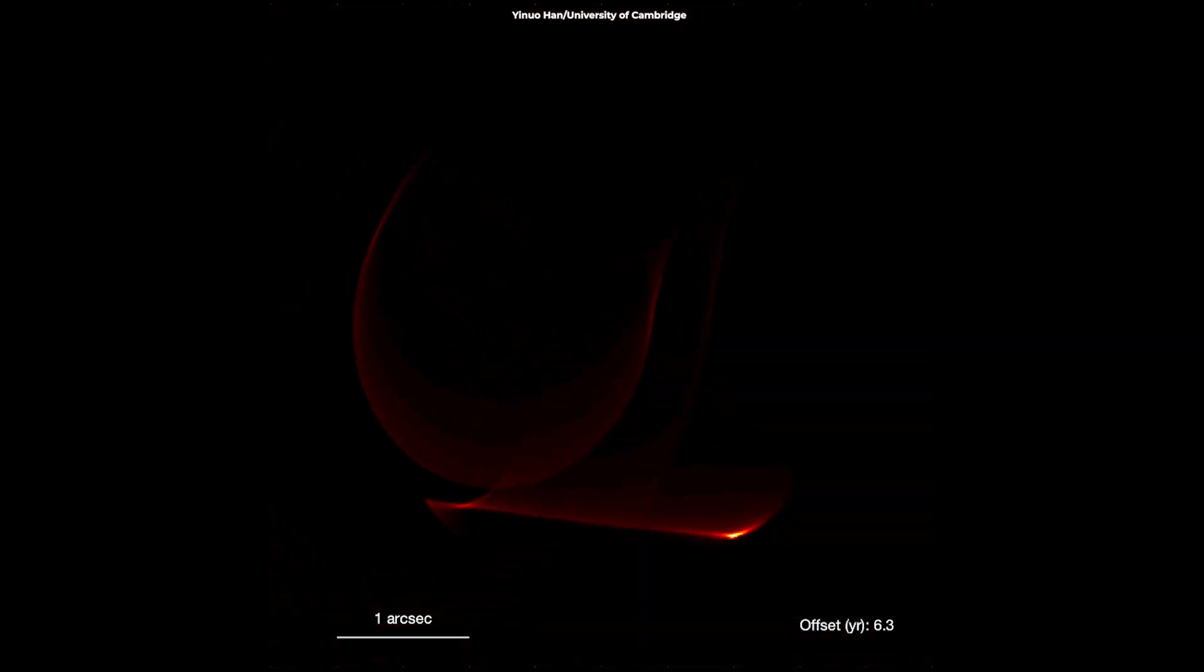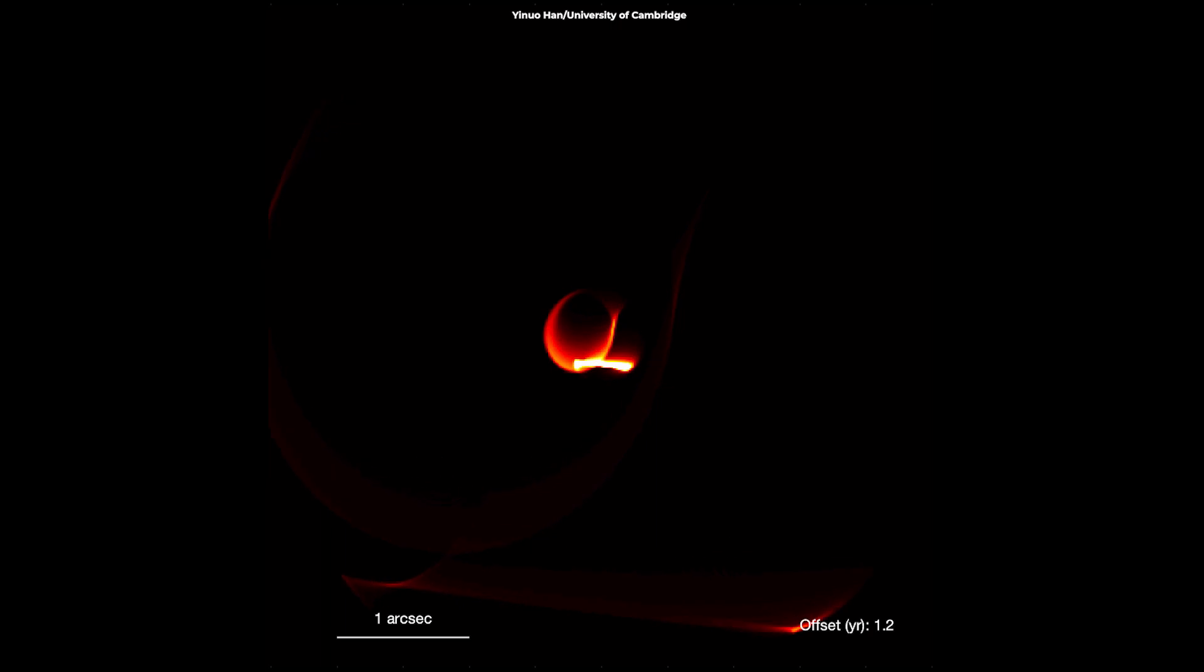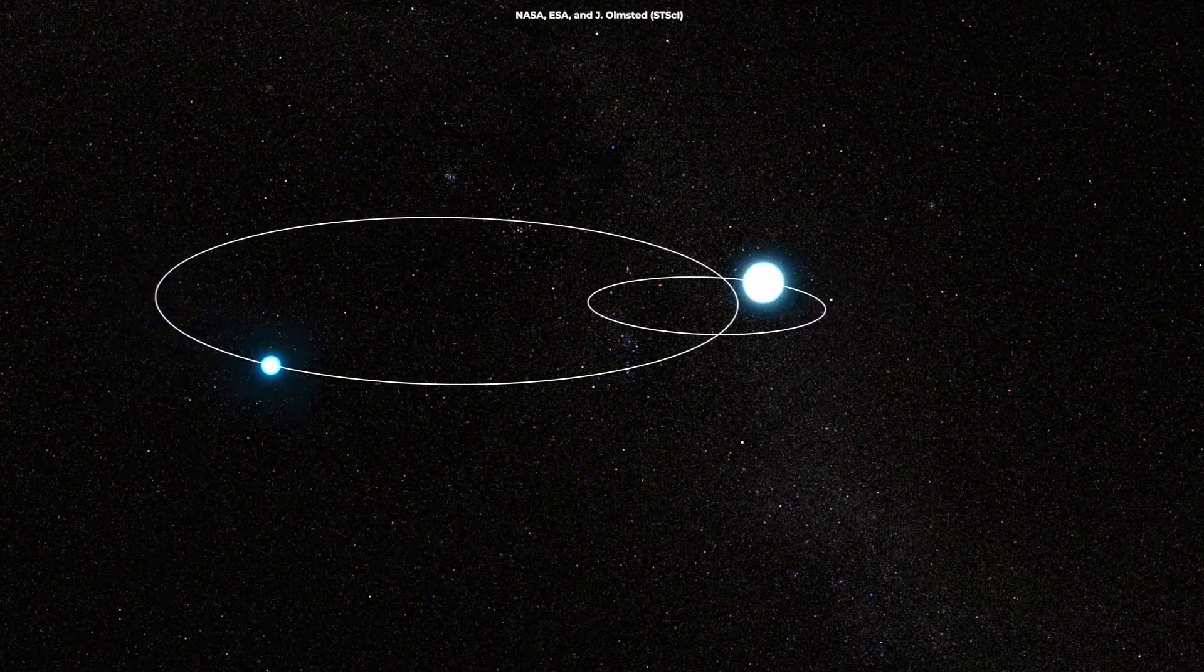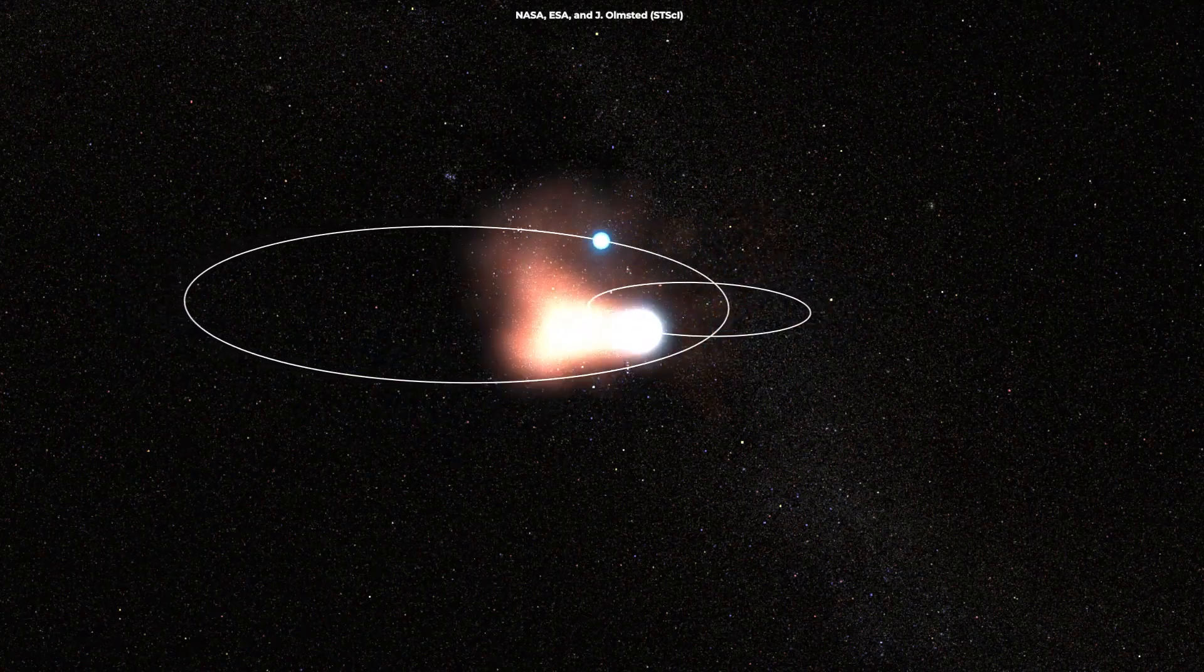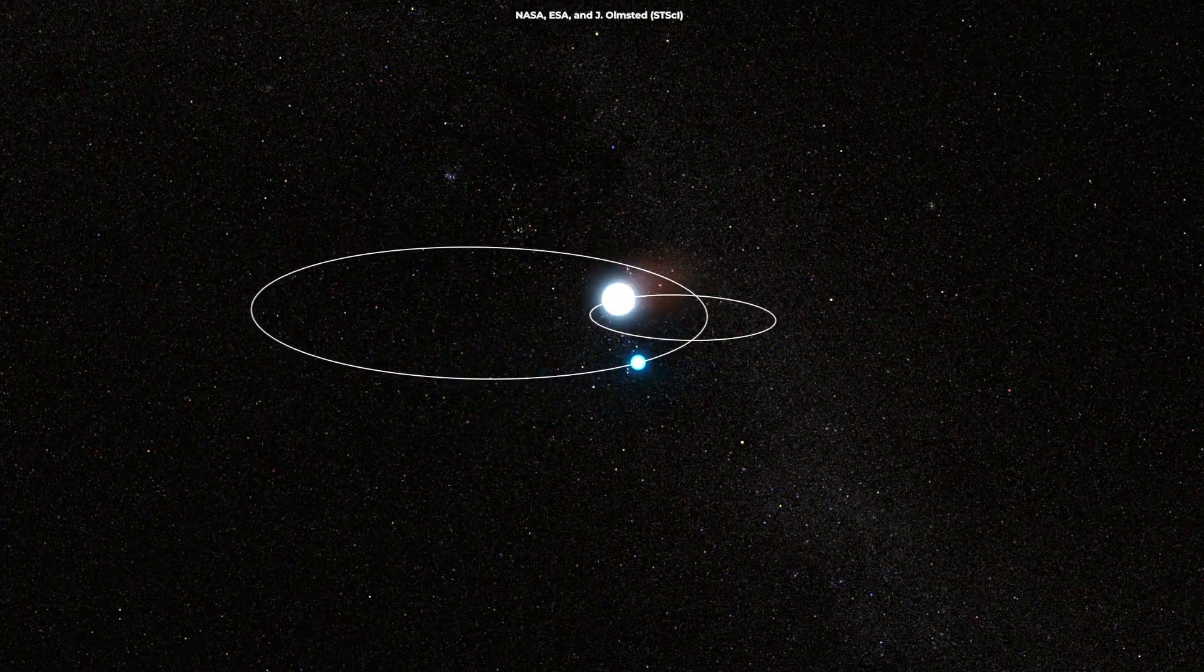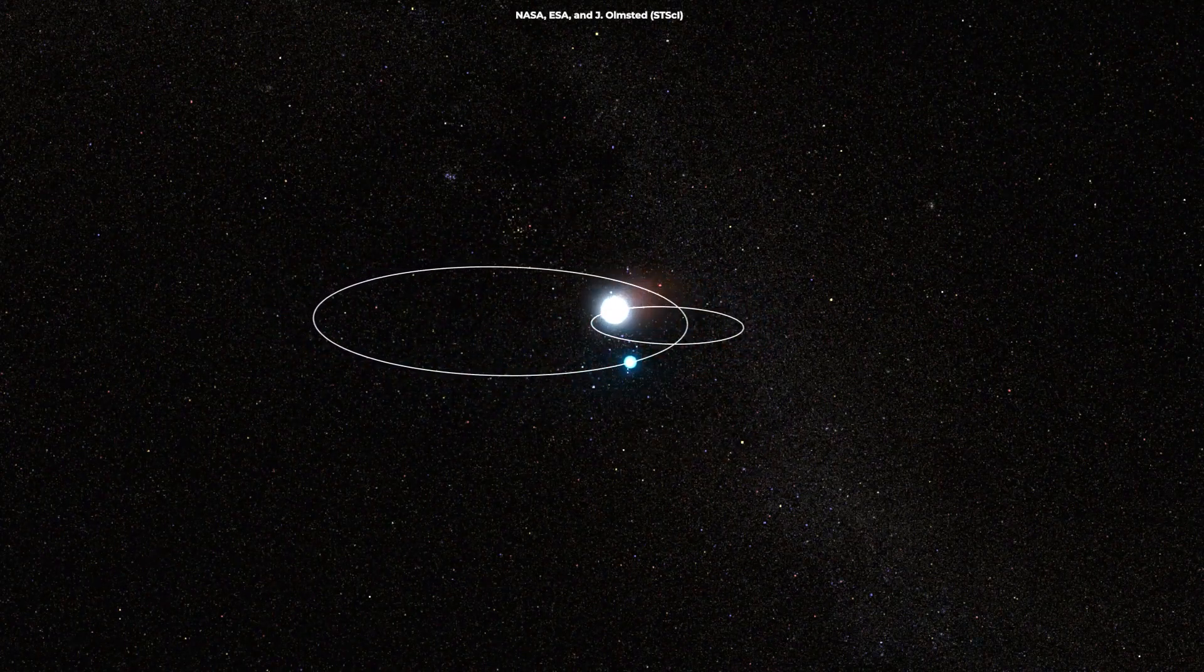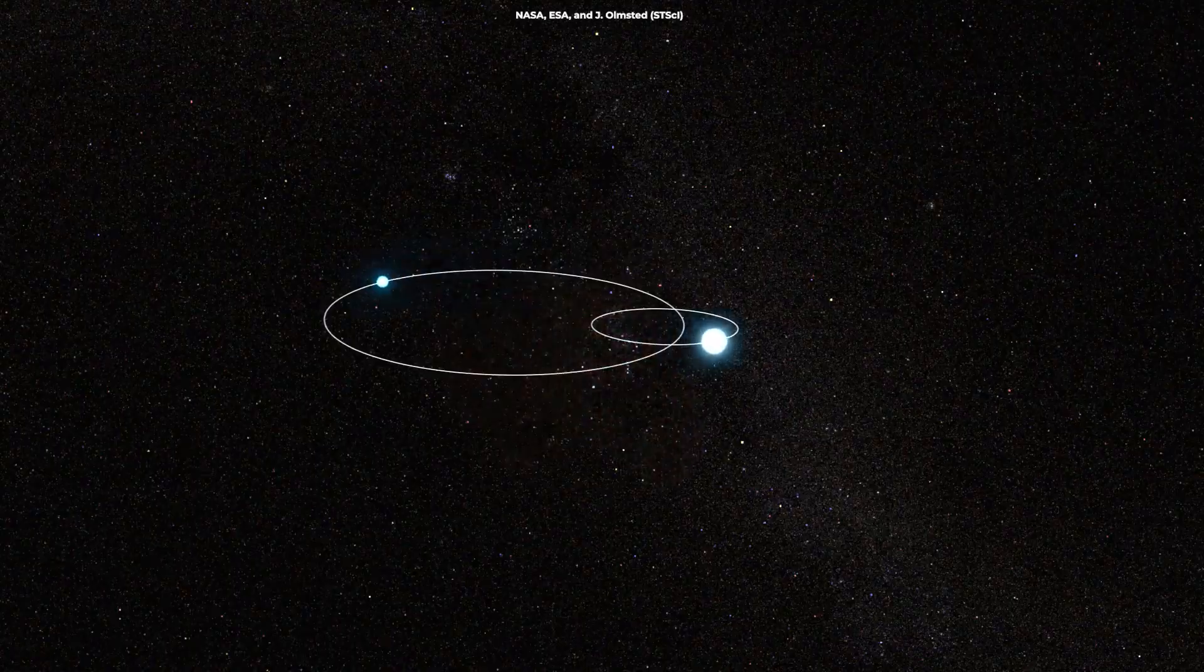WR140, however, has a few more tricks up its sleeve, layering more rich complexity into its showy display. The two stars are not on circular, but elliptical orbits, and furthermore, dust production turns on and off episodically, as the binary nears and departs the point of closest approach.